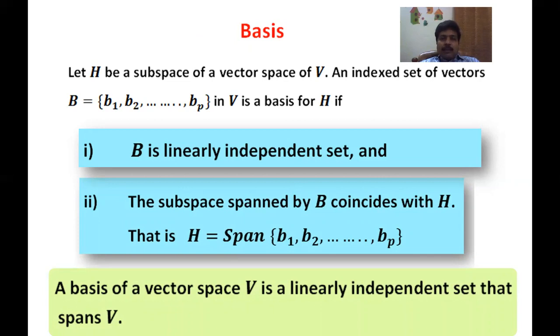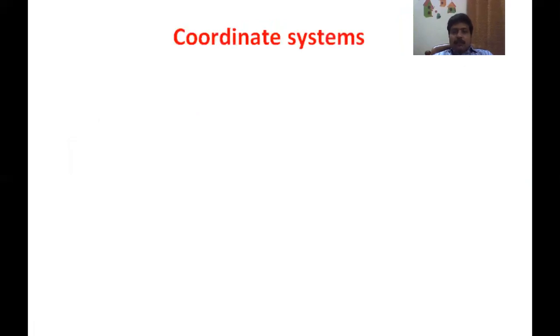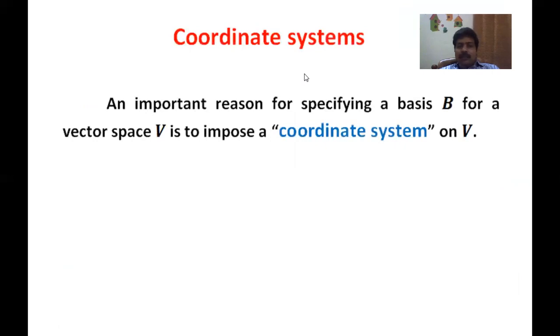So these are the points which we discussed in our earlier classes. With these concepts, let us move on to today's topic — Coordinate Systems. Using coordinate systems, we can establish a relation between vectors. Vector space vectors are nothing but objects, and those objects can be converted into some number system. An important reason for specifying a basis B for a vector space V is to impose a coordinate system on V, so we can construct a coordinate system relative to that basis.